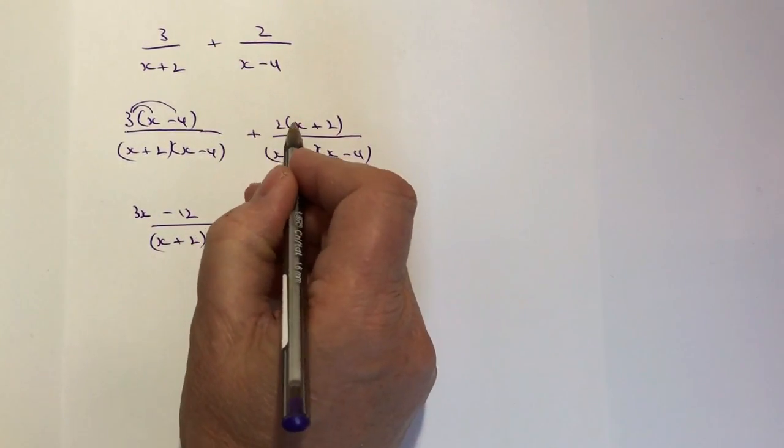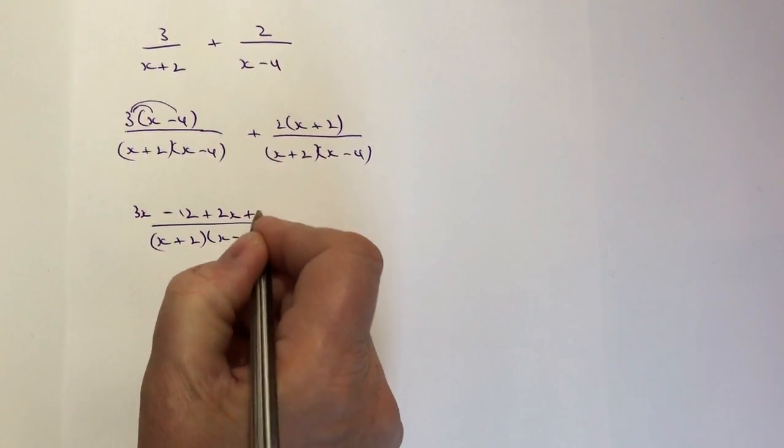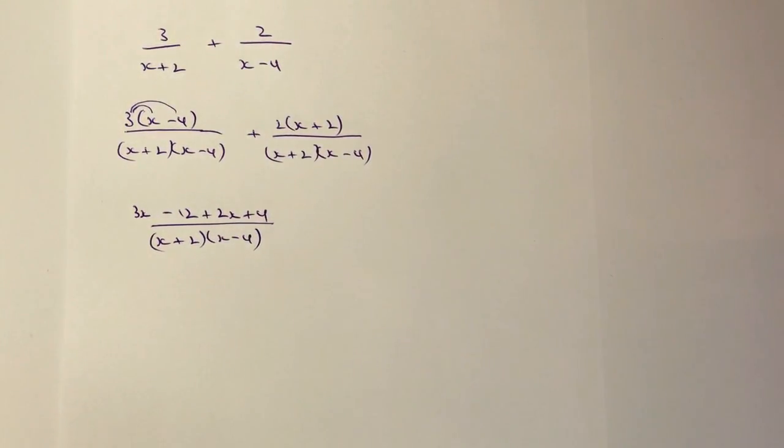And then I've got plus 2x, so plus 2x, and then plus 2 times plus 2 is plus 4. So it's starting to look a little bit better because now I'm in a position where I can gather up the like terms.